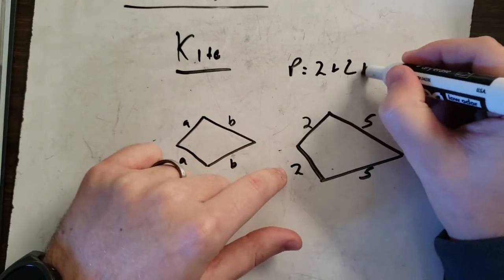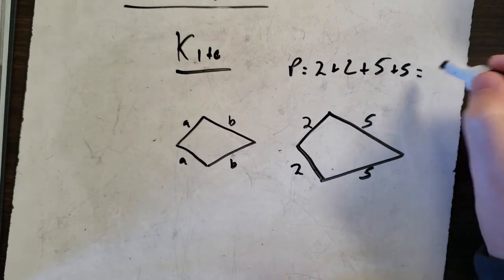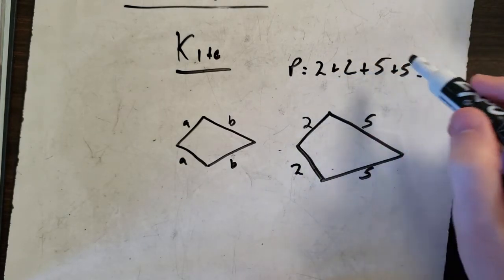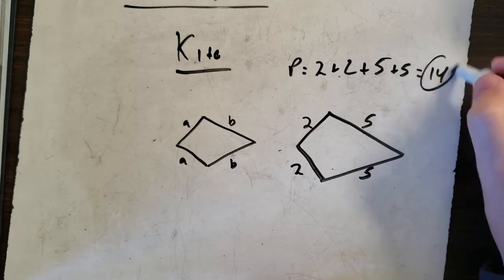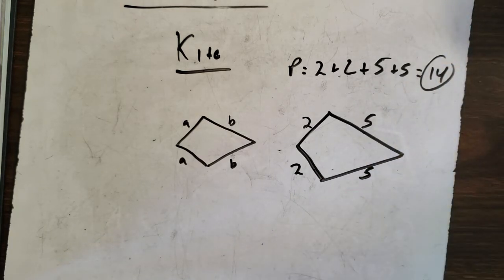2 plus 2 plus 5 plus 5. You do that. 2 plus 2 is 4, plus 5 is 9, plus 5 is 14. So kite, same thing. You're adding the sides up. That's all you're doing.